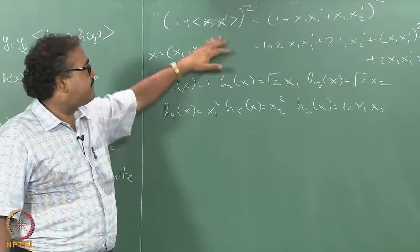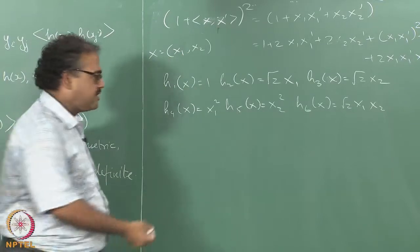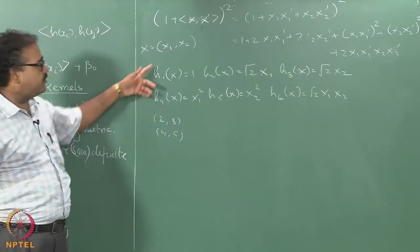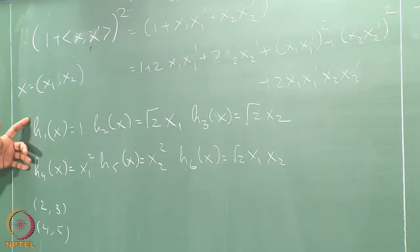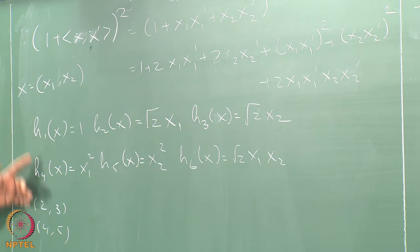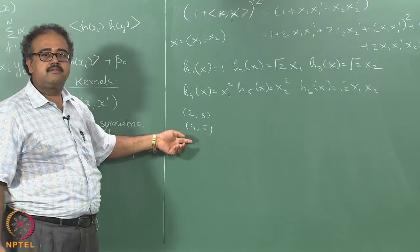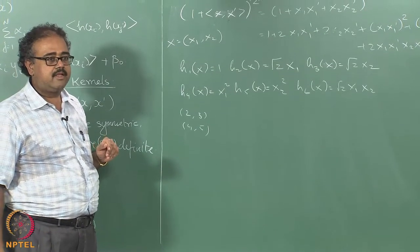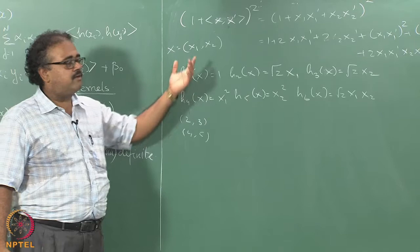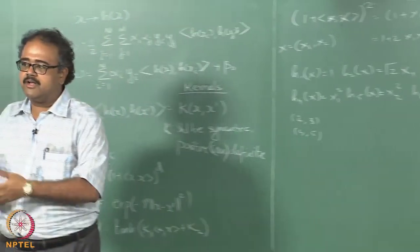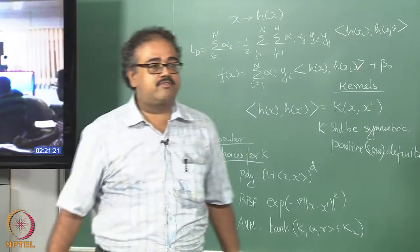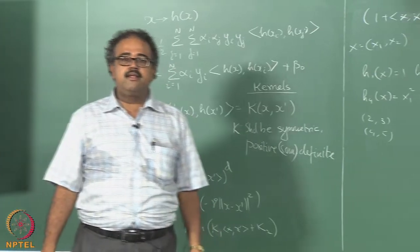That makes sense — instead of doing the basis expansion and then computing the inner product, I can just take the inner product right away. For degree 2 it might not seem great, but what about a degree 15 polynomial? I am essentially doing similar amounts of computation except that I have to raise something to the power of 15.